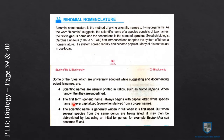Second rule: the first term, which is the generic name or genus name, always begins with a capital letter — for example, Homo is the genus of human beings. The species name is never capitalized; for example, sapiens has no capital letters, all letters are small.